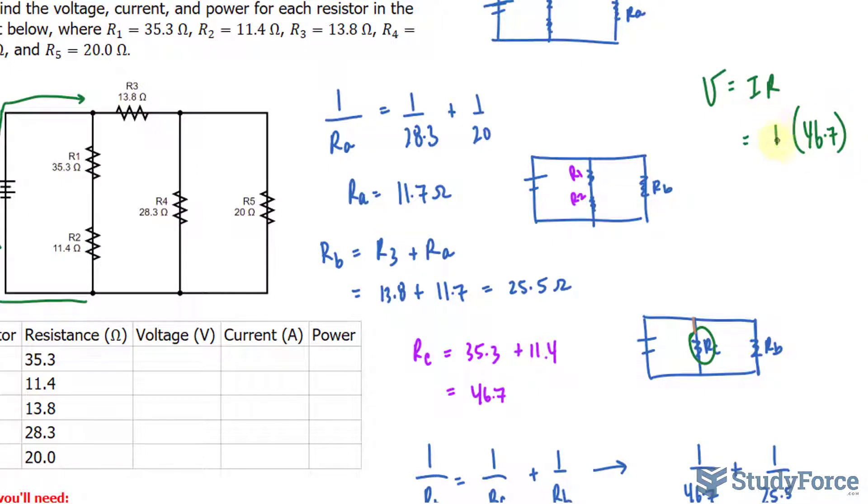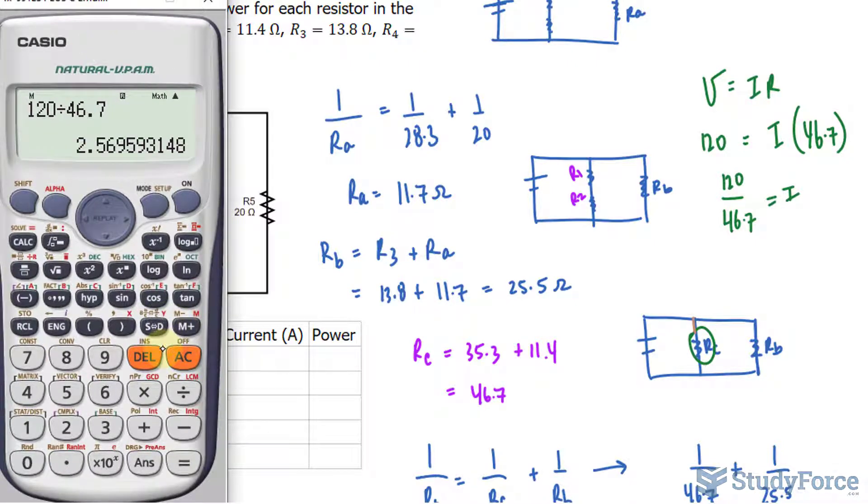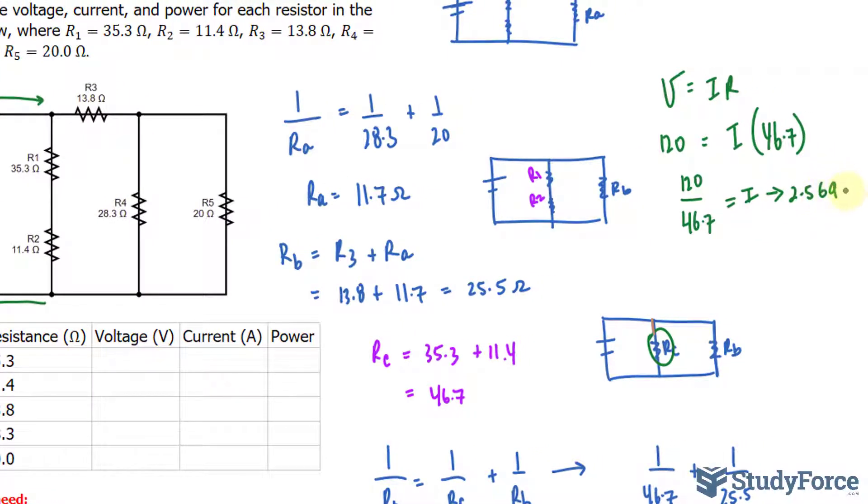We don't know the current flowing through RC, so we need to find that first. The voltage is 120, which is provided in the question. Dividing both sides by 46.7, 120 divided by 46.7 gives us roughly 2.569 amperes.